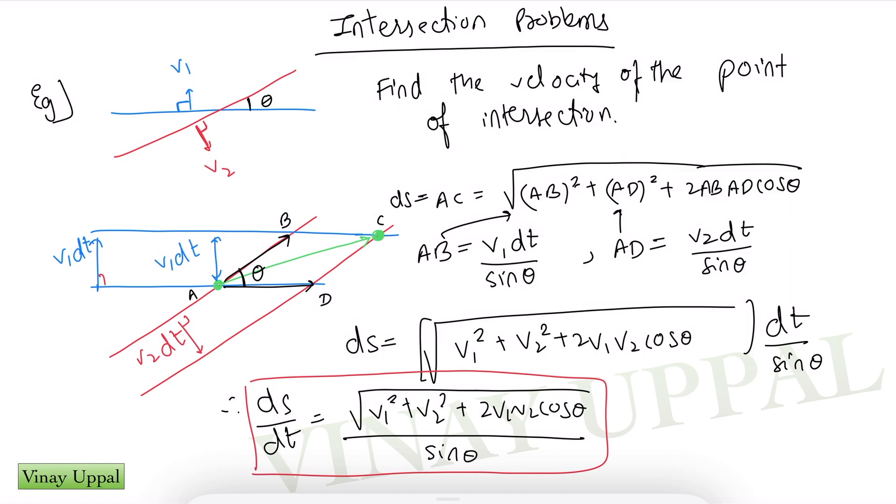So I hope you've understood how we did this. You have to realize once again I'm stating that this intersection point in such problems, the intersection is not a material particle. It's different particles of the two lines that are representing the intersection point at different instants.